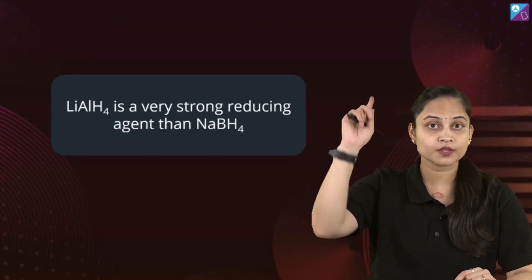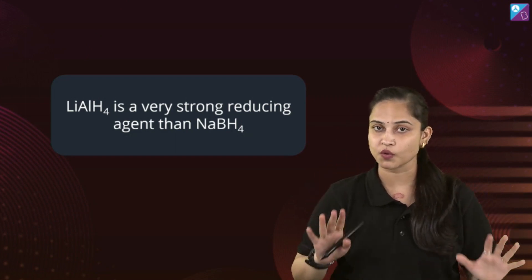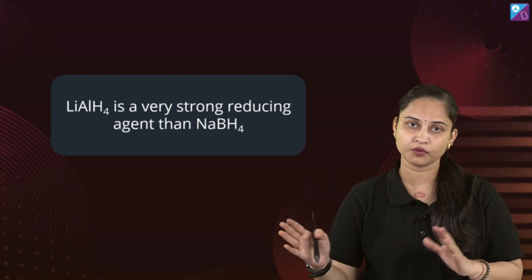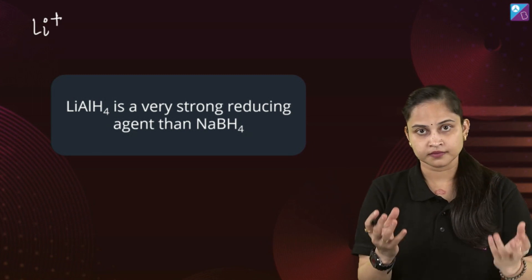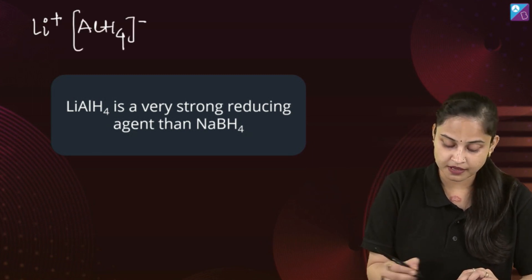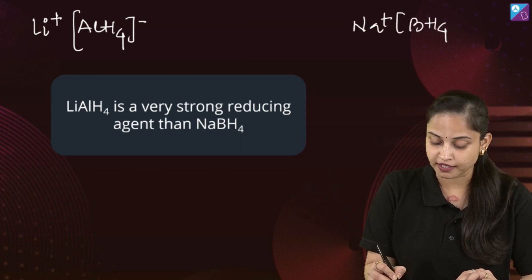Lithium aluminum hydride is a very strong reducing agent in comparison with sodium borohydride. If I write them in ionic form, it's Li⁺ and AlH4⁻. Talking about sodium borohydride, it's Na⁺ and BH4⁻.